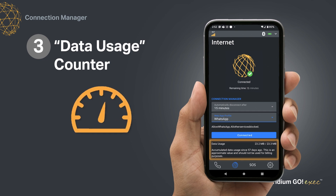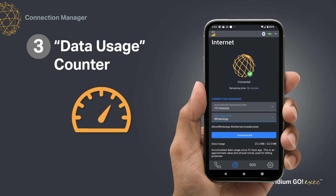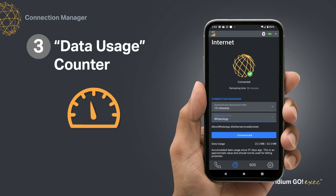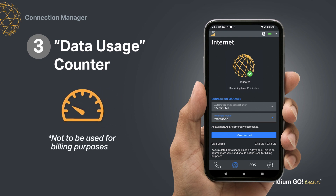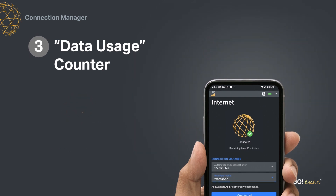Data usage shows you how much satellite data you've sent and received. Your total data usage would be a sum of both. You can reset the counter from the Settings menu on the Iridium Go Exec device or in the app. Please note, this is only meant to inform you of your approximate data usage — it is not to be used for billing purposes.